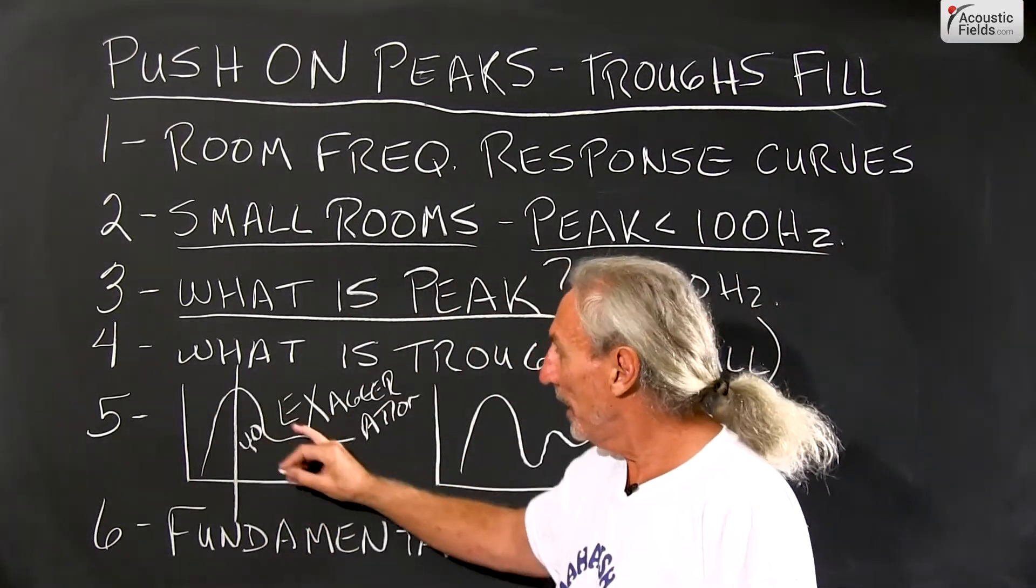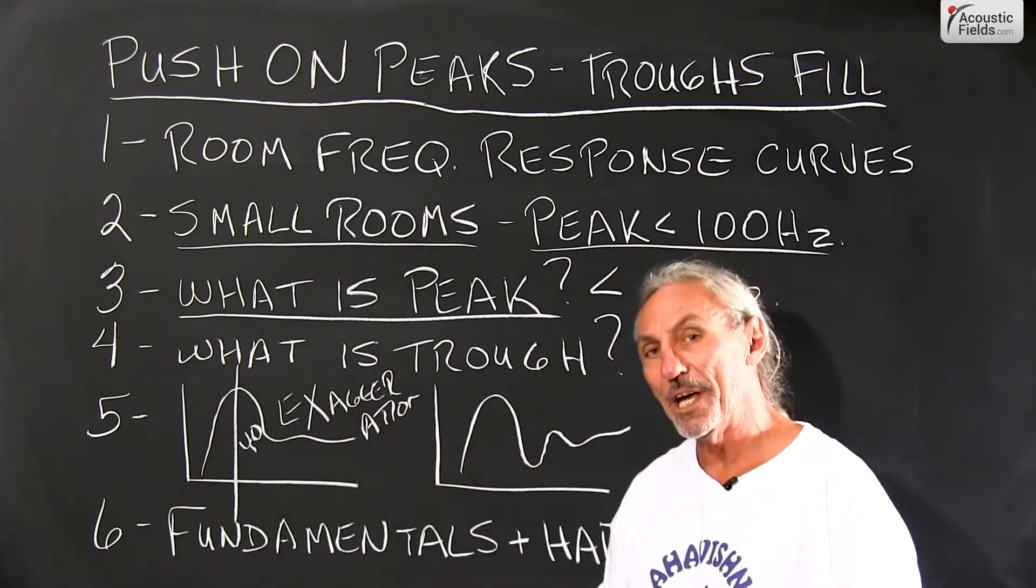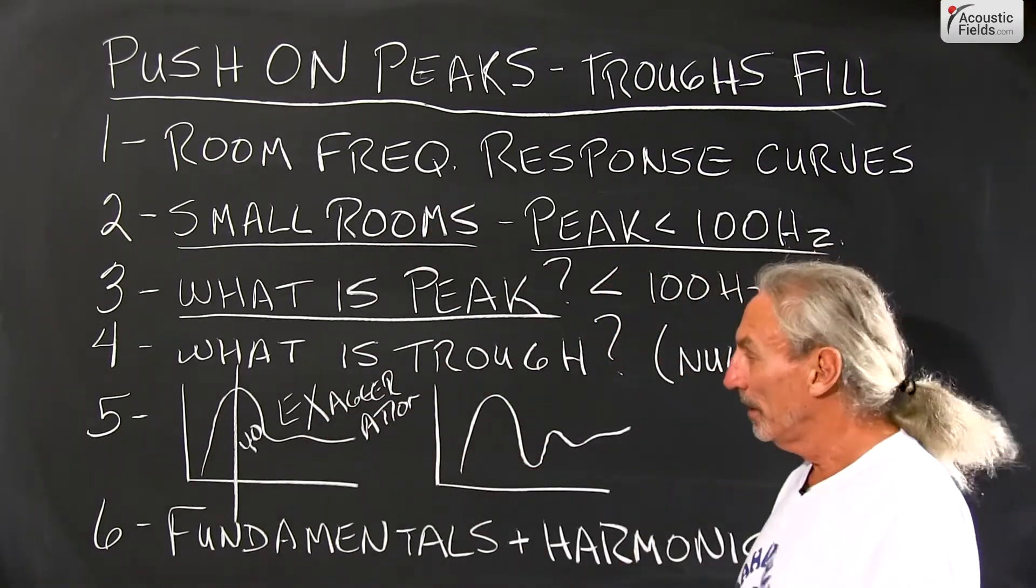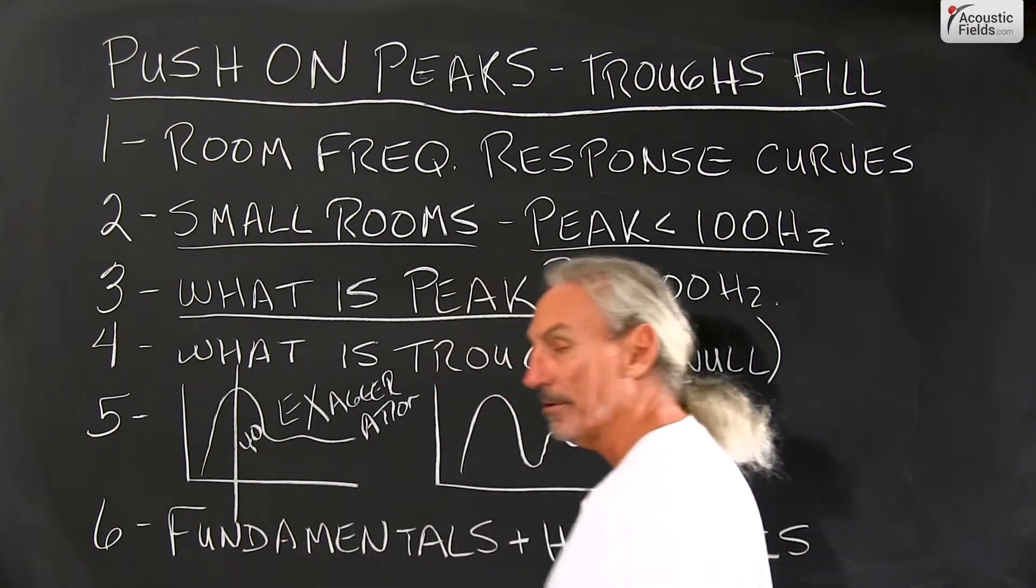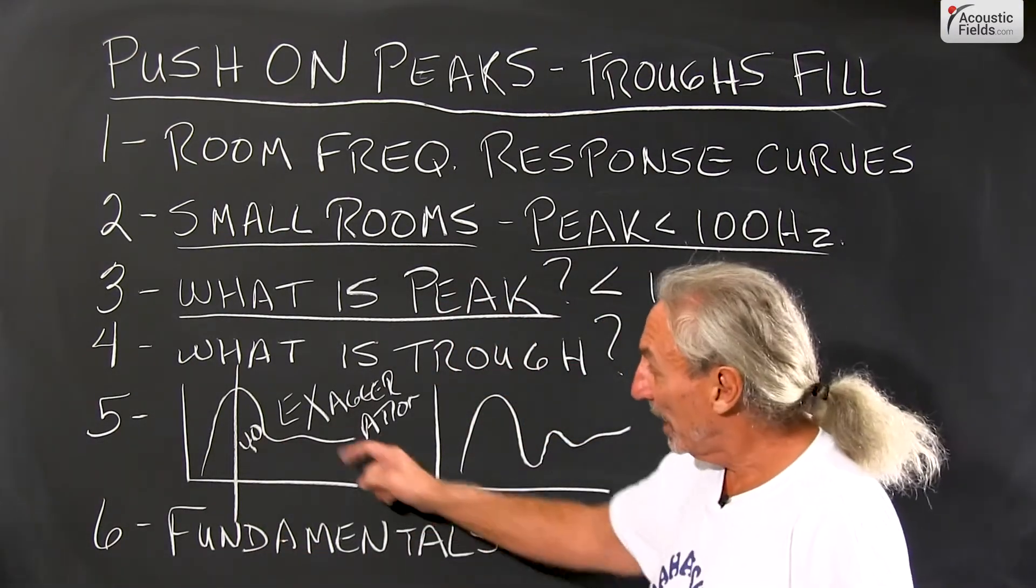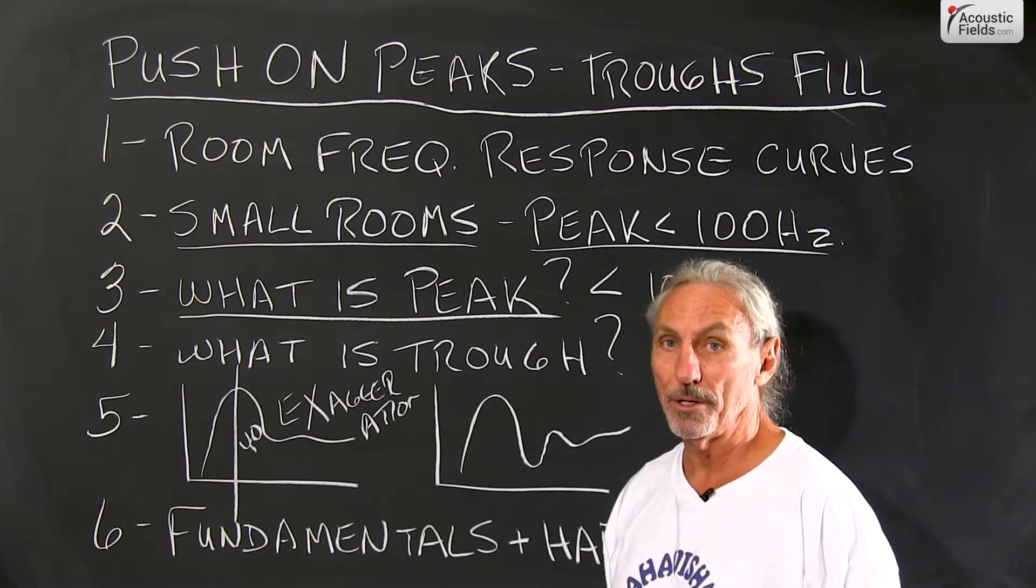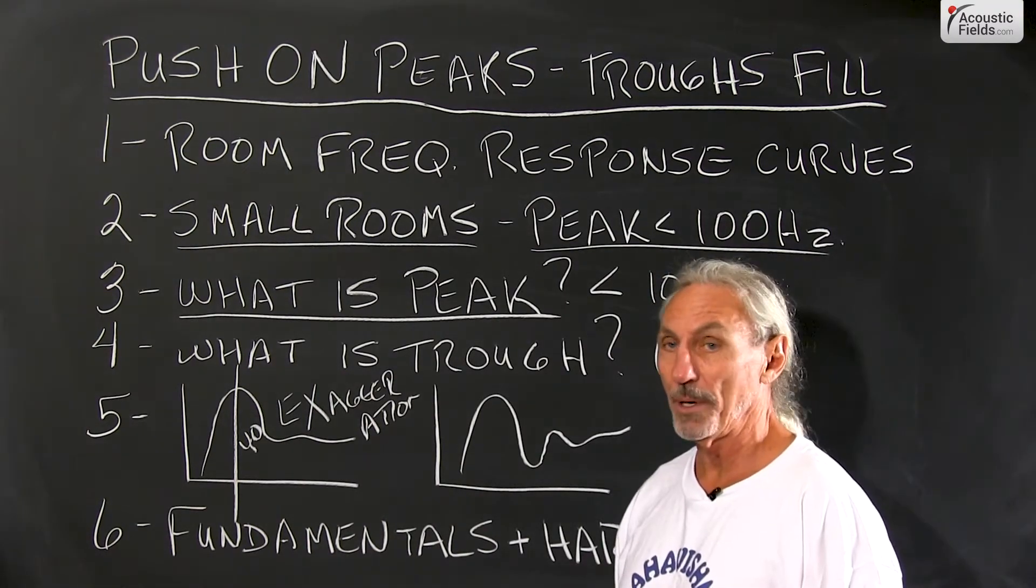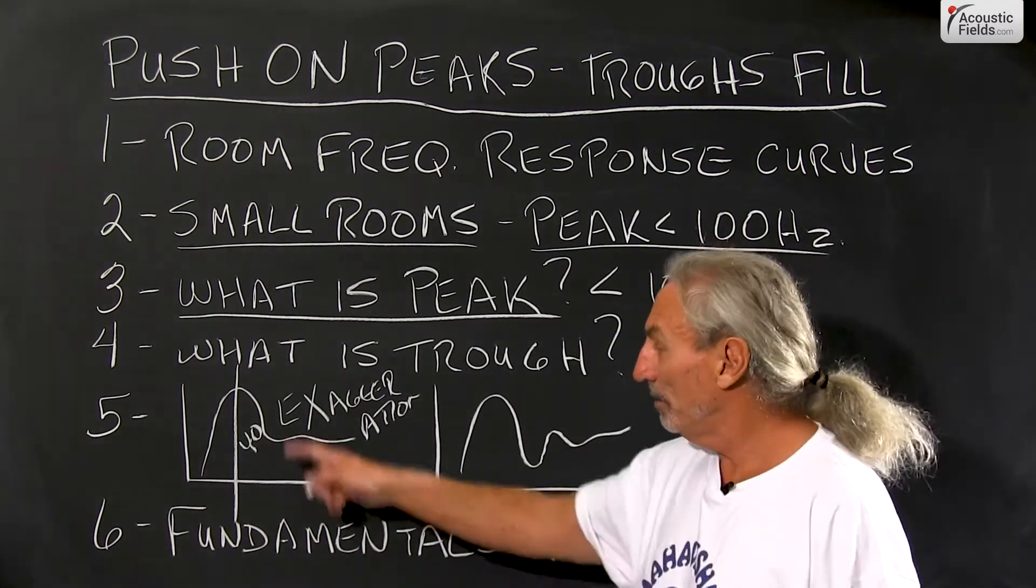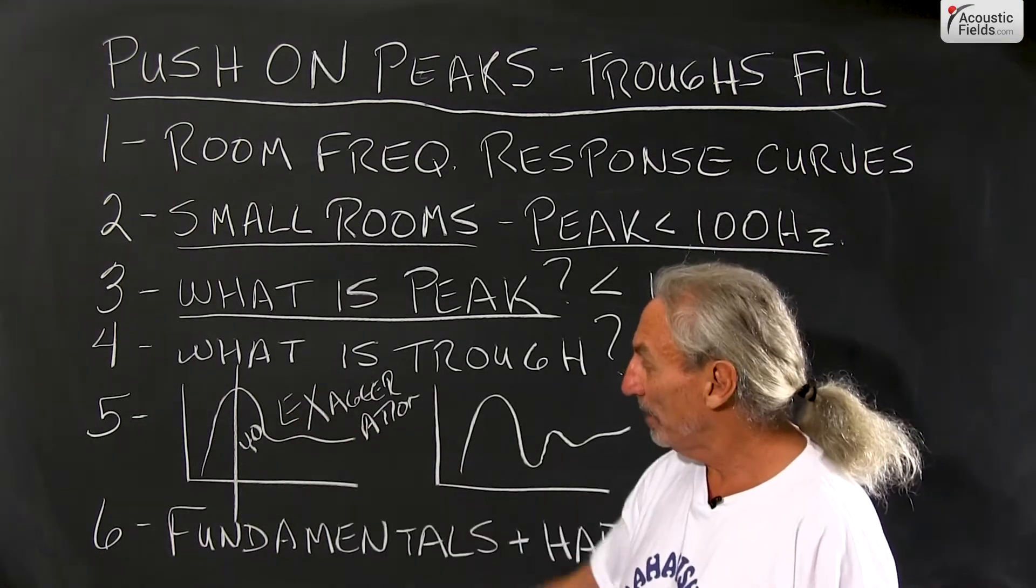So what this picture or room response curve is telling us is that the room is not happy with this kind of energy and it's telling you it's not happy with that kind of energy and that's its way of telling you. So when you take a picture so to speak of the energy in the room you're going to see that it's really unhappy at 40.